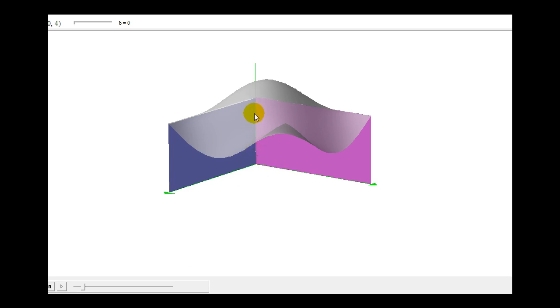If we integrate with respect to x first, we would integrate along this blue plane, and then as we integrate with respect to y, we would be accumulating the volume along the positive y axis as we see here.